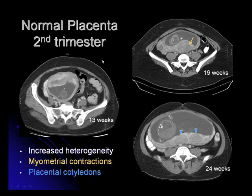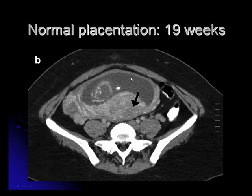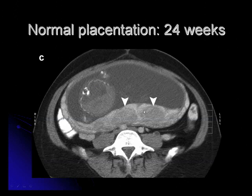These are some examples of the normal placenta during the second trimester. Features include increased heterogeneity with IV contrast enhancement. Myometrial contractions may be seen, and later in the second trimester, multiple placental cotyledons may be seen. At 13 weeks, you can see that the placenta is already well delineated from the myometrium. The myometrium does not take up contrast as much as the placenta and therefore is hypodense to the placenta. At 19 weeks, there is an increase in placental uterine thickness caused by a contraction of the underlying myometrium. And these are the placental cotyledons.